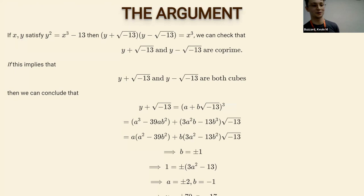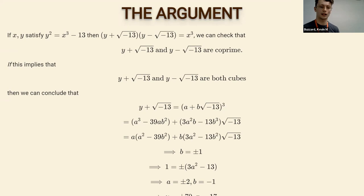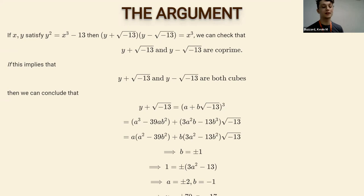So here's the argument. You write down y squared equals x cubed minus 13, move the minus 13 to the left, and factor it over a ring where you take the integers and add one extra element: a square root of minus 13. You haven't added the whole complex numbers — just one extra thing. In that ring you can check the two factors are coprime, and then — inspired by how things work with integers — if a product of two coprime things is a cube, maybe both are cubes.